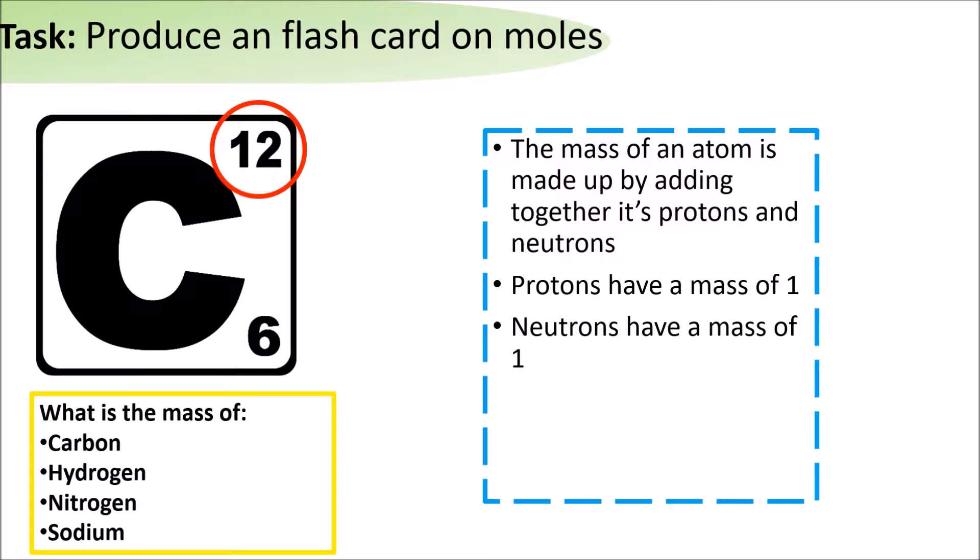The mass of an atom is made up by adding together its protons and neutrons. Protons have a mass of 1 and so do neutrons. So in carbon, its total mass would be 12.